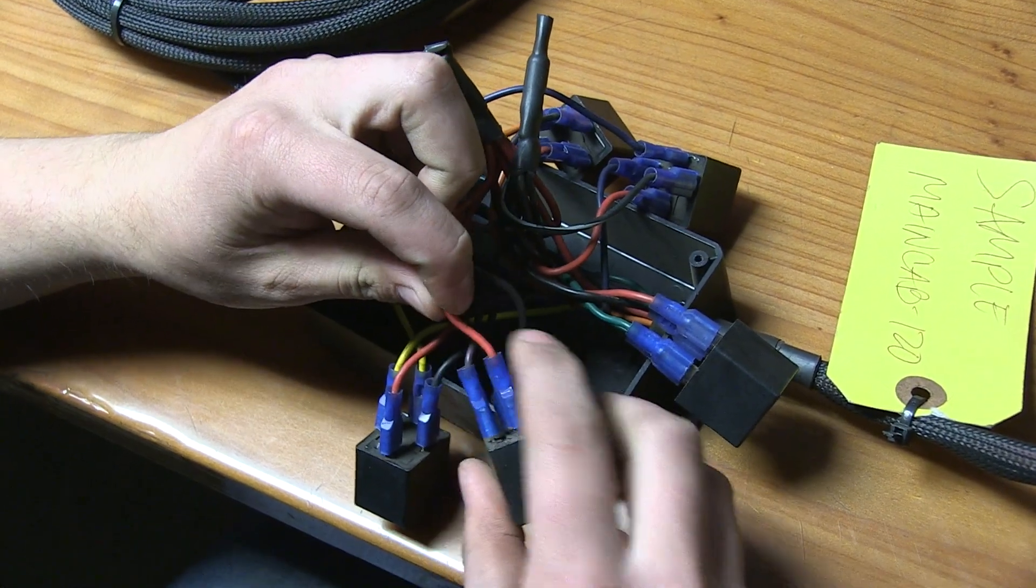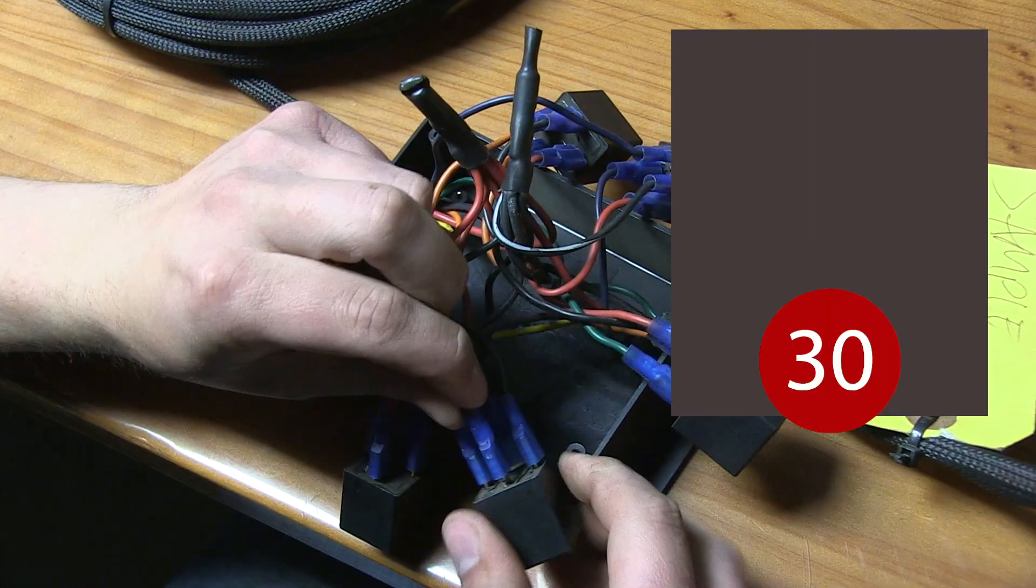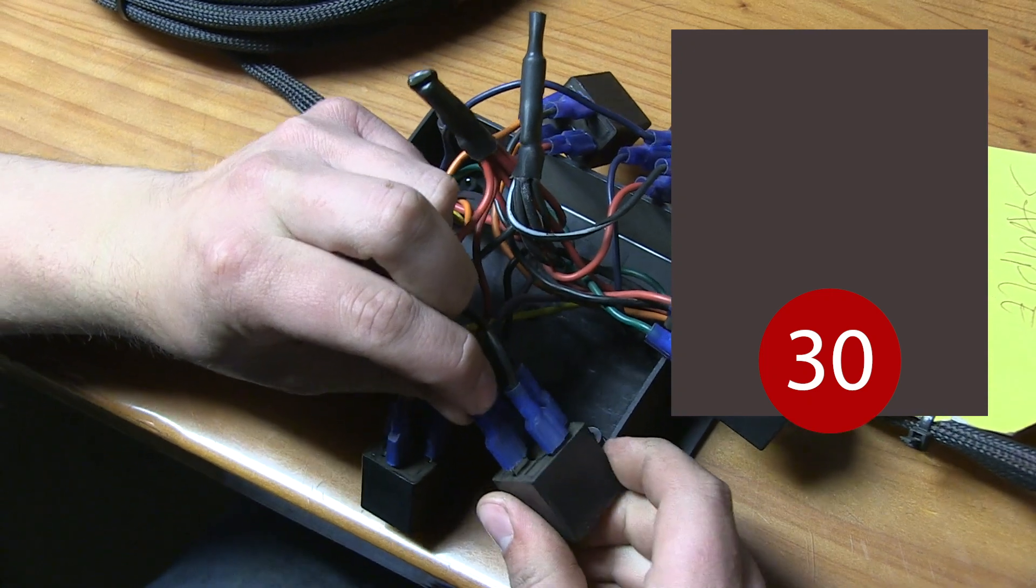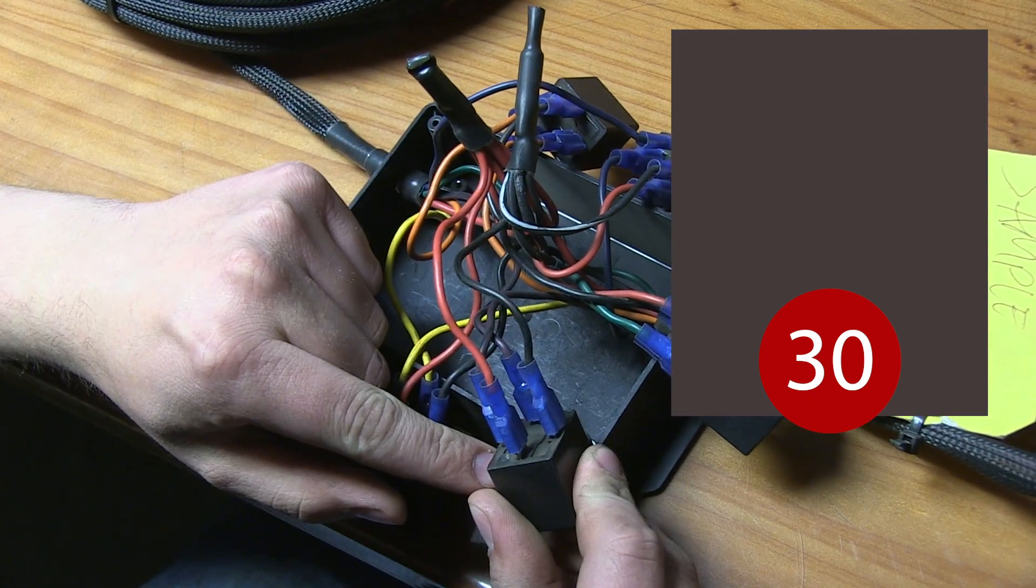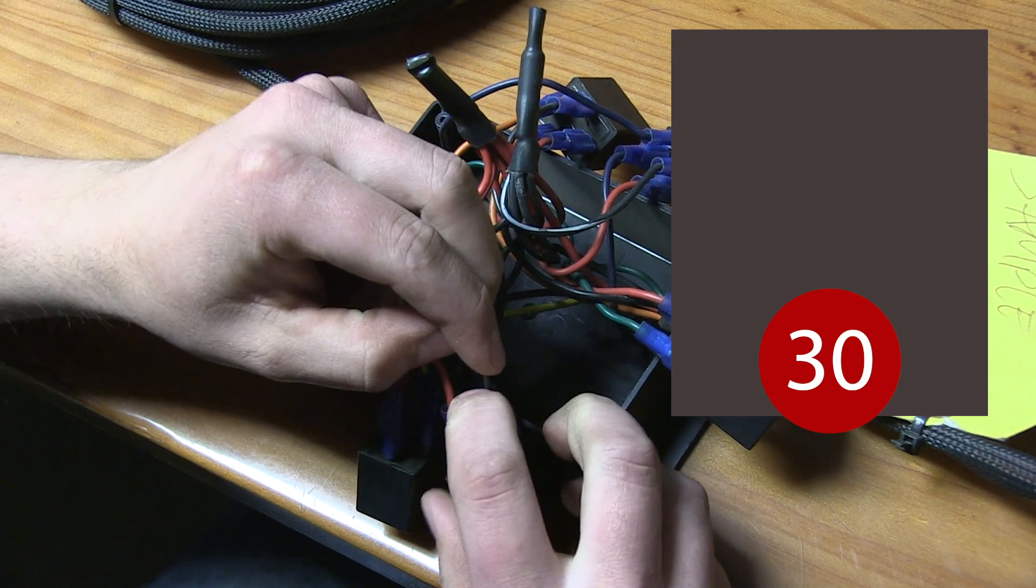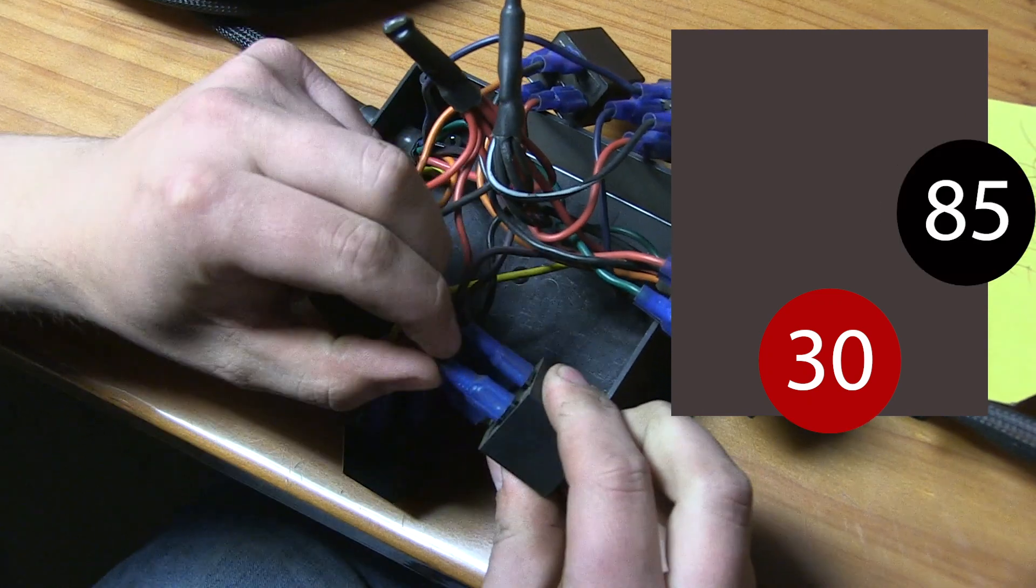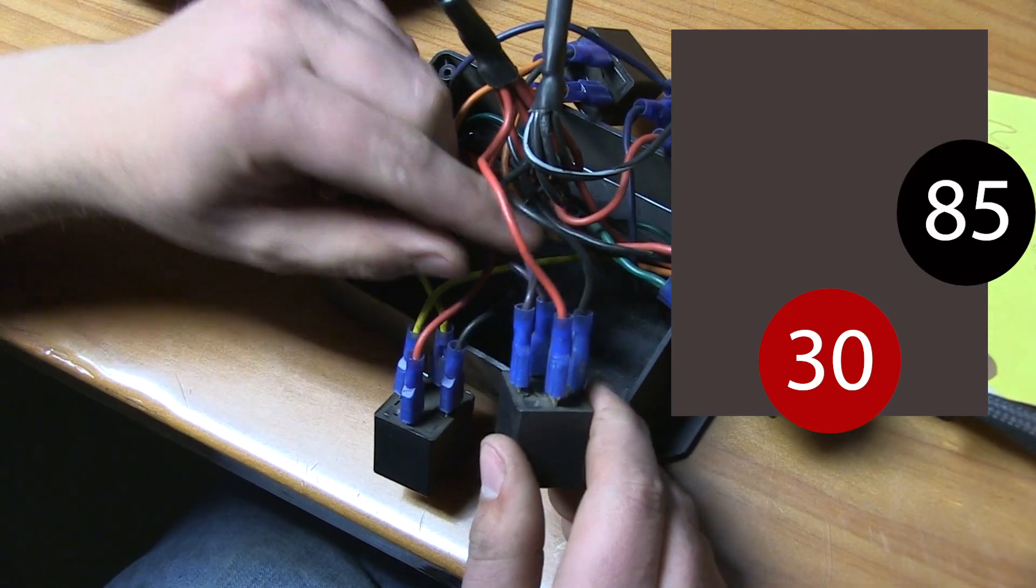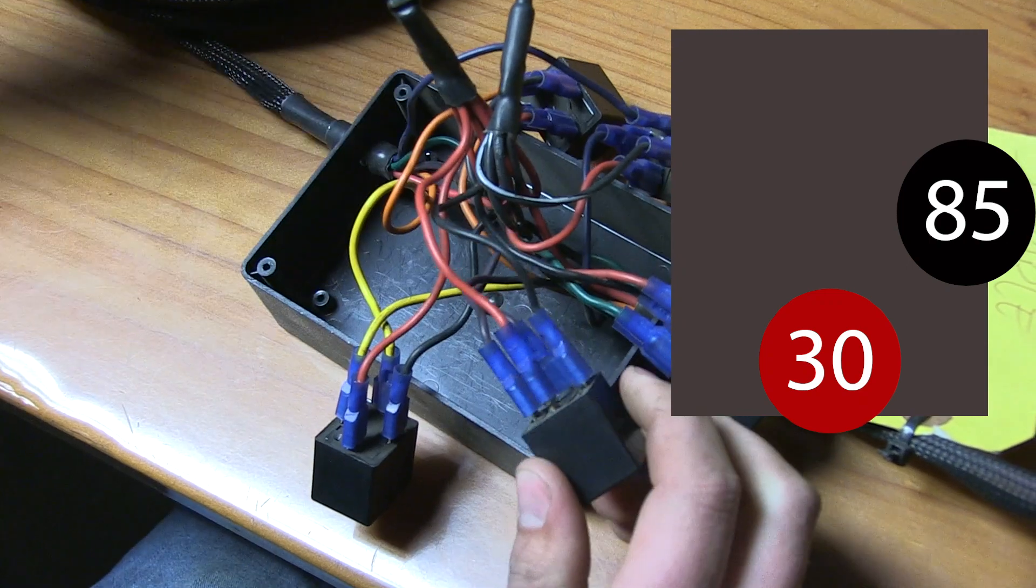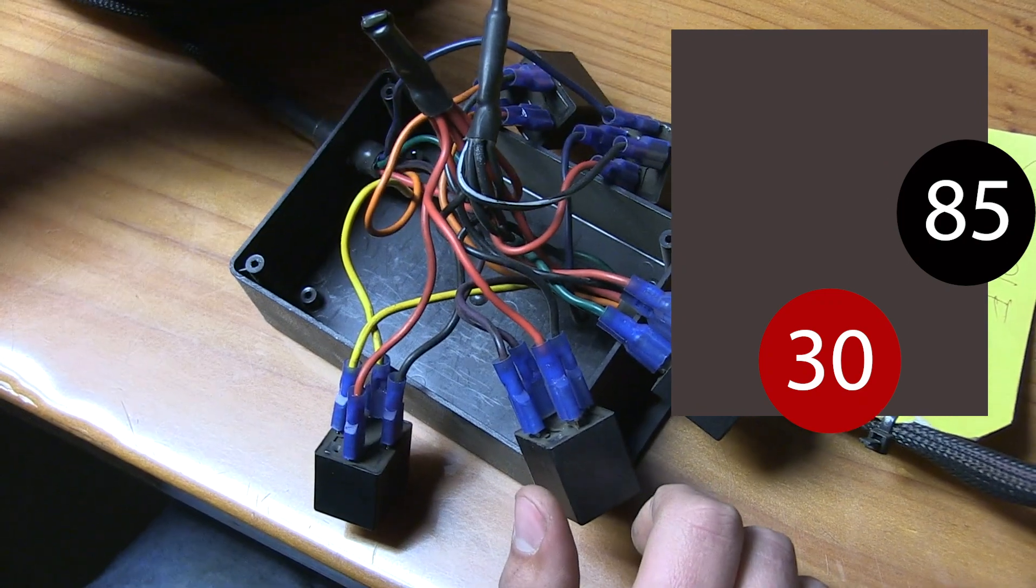And the red wire should go to terminal 30 on the relay. The black wire should go to terminal 85. And then you have two colored wires to each one.